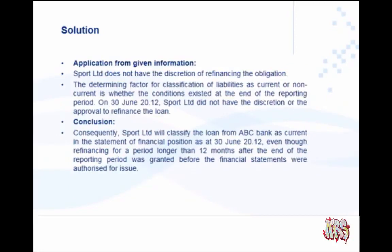For our application: Sport Limited does not have the discretion to refinance. The determining factor for classification is whether the conditions existed at year end. At year end, Sport Limited did not have the discretion. Only after year end did ABC Bank agree to refinance. At year end, Sport Limited had to pay within six months — on 30 June, Sport Limited did not have the discretion or approval to refinance the loan. Consequently, Sport Limited will classify the loan from ABC Bank as current in the Statement of Financial Position at 30 June 20x12.